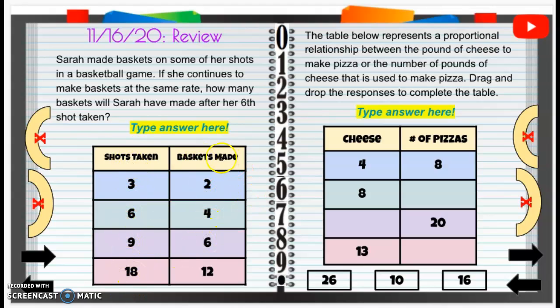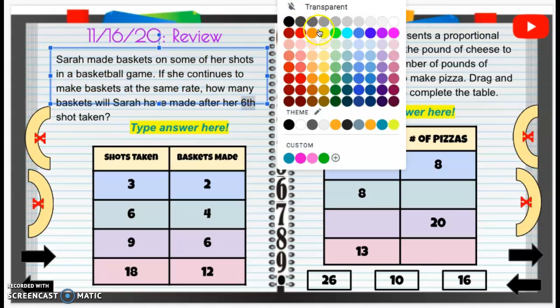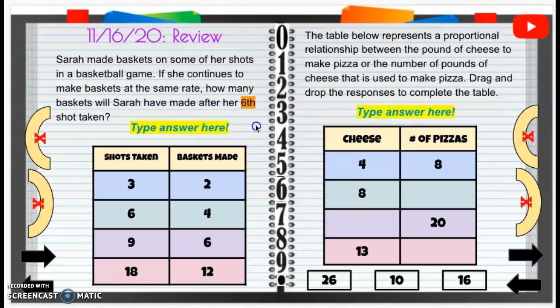18 shots, 12 baskets made. So we're going to take a look at this and it says, okay, so after her sixth shot on the hoops, how many baskets did she make for six, if she took six shots on the hoop?